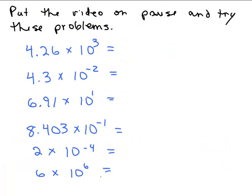Here are six problems to try — put the video on pause. Some have positive exponents, some have negative exponents. For the first one: 4.26 times 10 to the third power gives a bigger number. It's like multiplying by 1,000, so move the decimal to the right three spaces. That gives us 4,260.